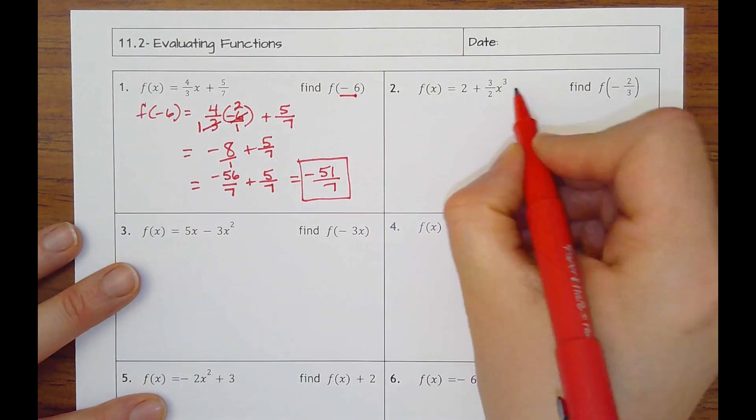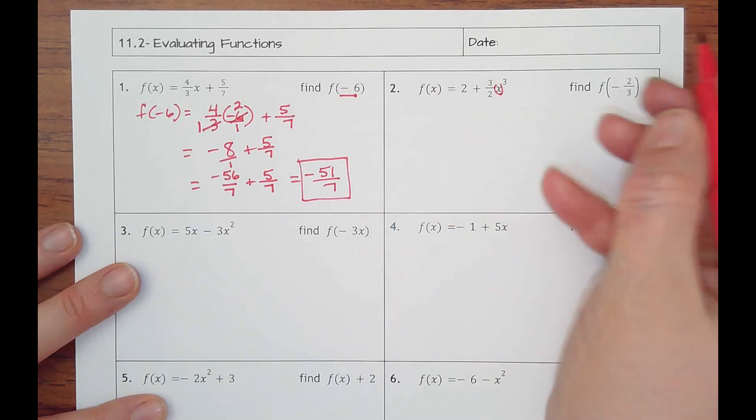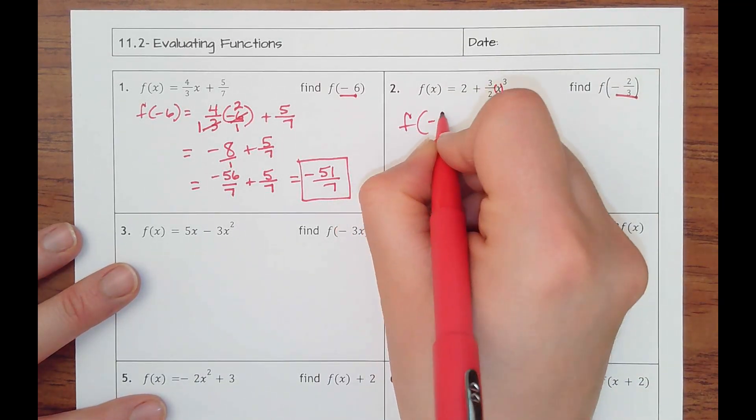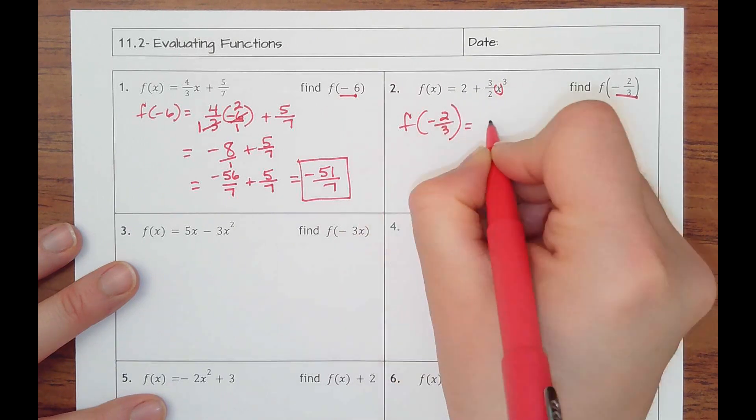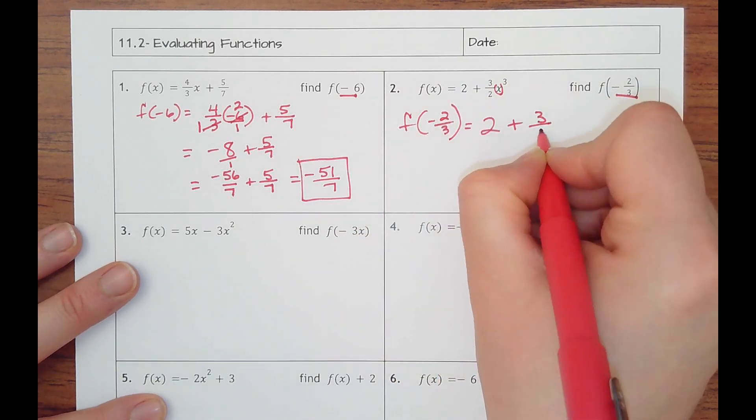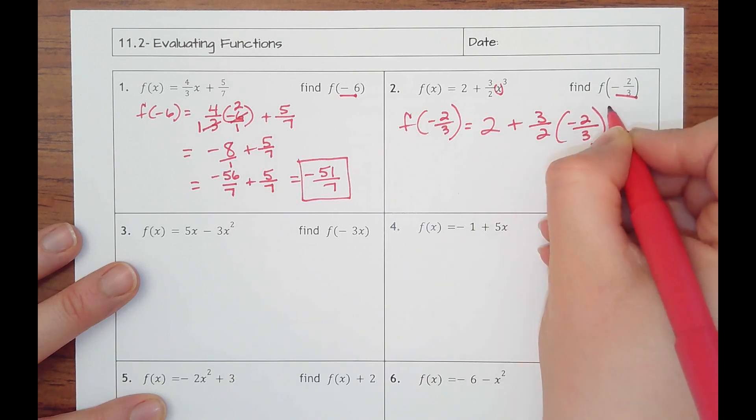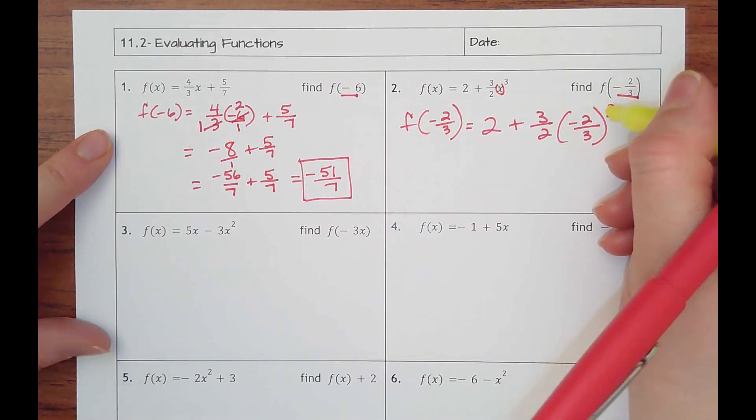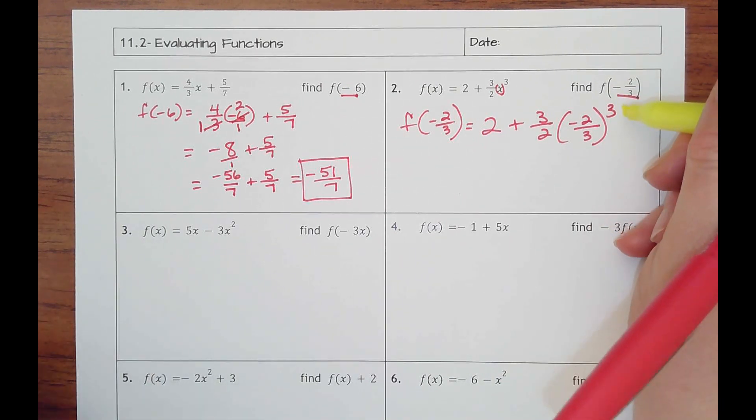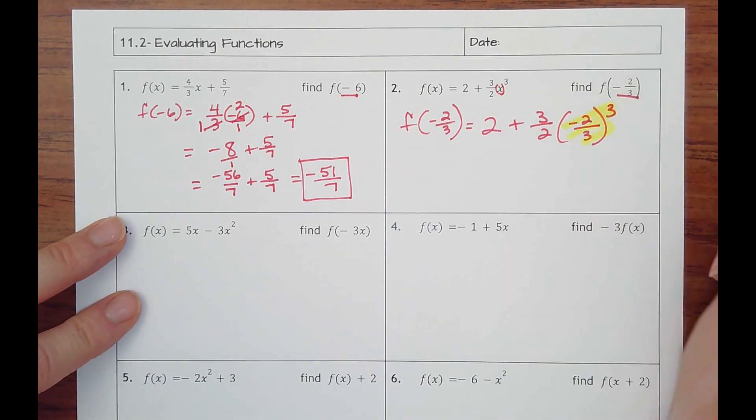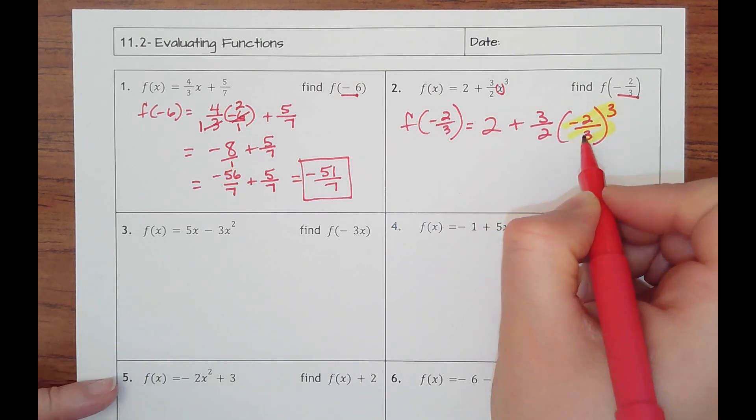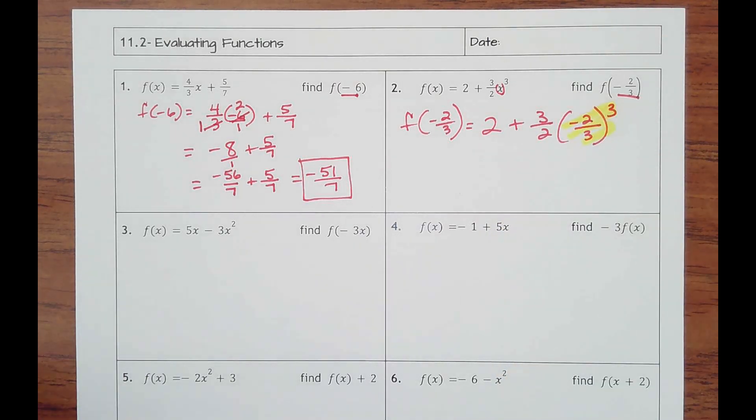Number two, fractions and then x is being cubed. So we would find f of negative two thirds, two plus three halves times negative two thirds cubed. Remember from order of operations, PEMDAS, you always want to do not only parentheses, but more importantly, exponents before you do multiplication. So what this says is take three halves times whatever you get for the answer of negative two thirds cubed.